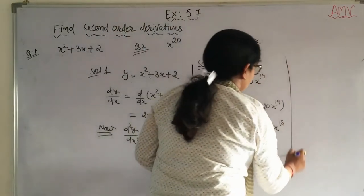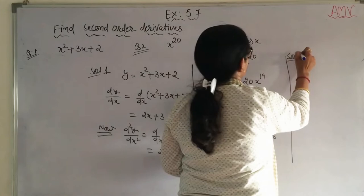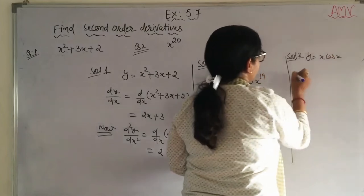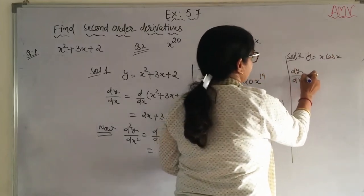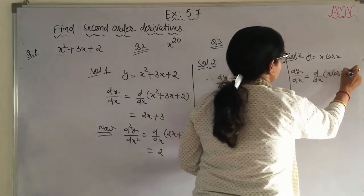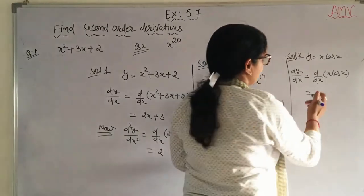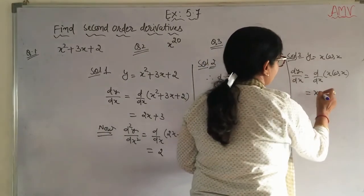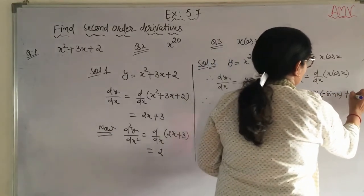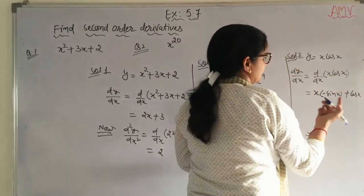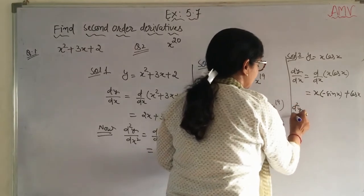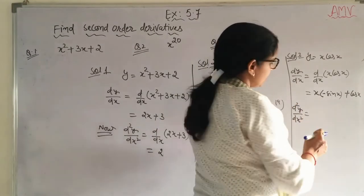For question number 3, let y = x cos x. First order derivative dy/dx: apply the product rule to x cos x. First, x as it is times derivative of cos x, which is −sin x. Plus cos x as it is times derivative of x, which is 1. So dy/dx = −x sin x + cos x.